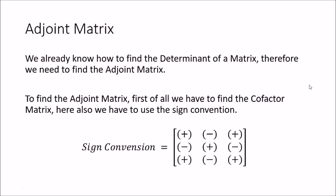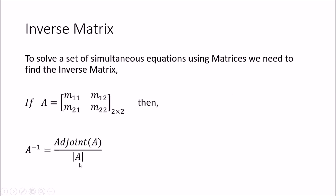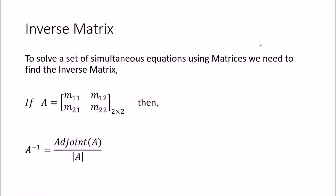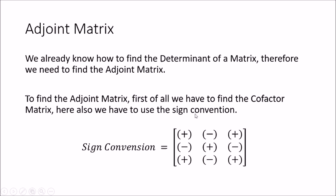We already know how to find the determinant of a matrix and we need it in this equation, and we also have to find this adjoint matrix. The adjoint matrix is used in order to get the inverse matrix, and in order to get the adjoint matrix we have to find the cofactor matrix. When finding the cofactor matrix we use the same sign convention that we used with the determinant.